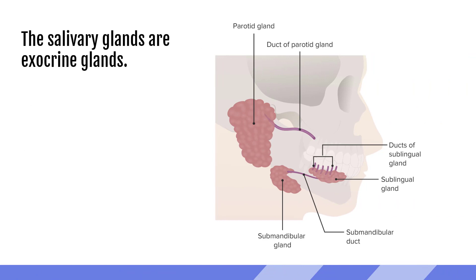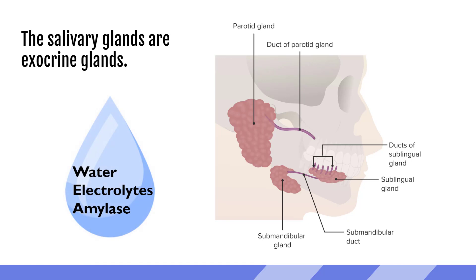The salivary glands are exocrine glands, because they produce saliva and then move that saliva out of the gland via a duct. The saliva aids in digestion and is made of water, electrolytes, and amylase. Amylase is a biochemical that helps to digest carbohydrates, and that process starts in the mouth.